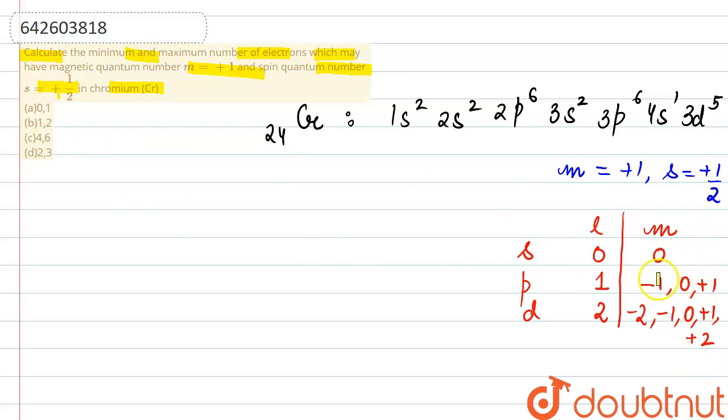So we can clearly see from here that plus 1 value of m will be coming from two cases. Magnetic quantum number is plus 1 for the p subshell, and plus 1 can be seen in the d subshell as well.